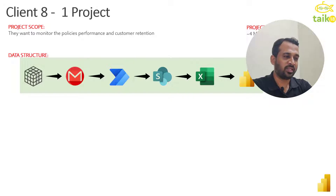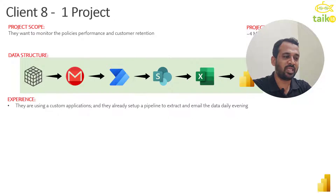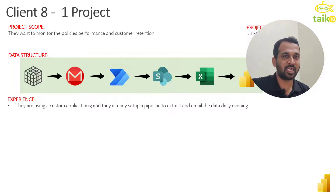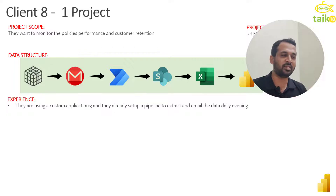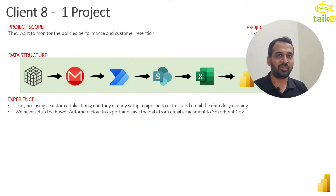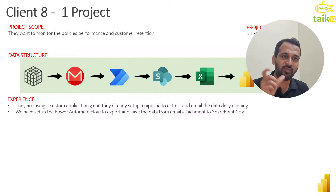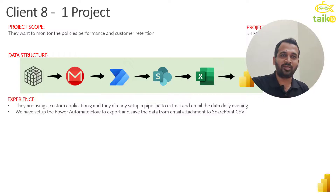From the dataflow, we produce reports in Power BI. They are using a custom application which already has a pipeline set up to extract and email the data daily in the evening. This custom application exports the CSV file on a scheduled basis. They set it up to send an email every evening to a particular email ID — for example, a Power BI admin account — and we use that email ID to configure Power Automate to extract the attachment and store it into a SharePoint folder.